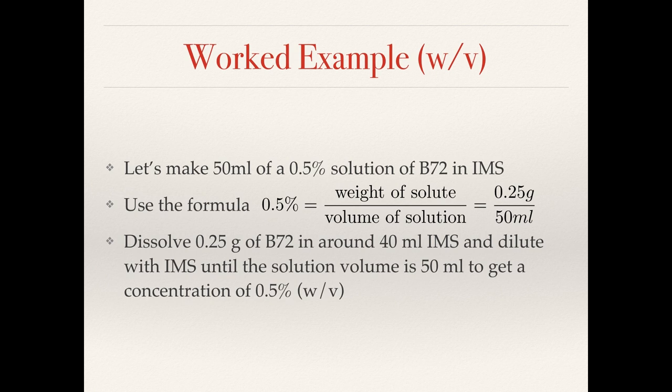In the next segment of this video we're going to go to the kitchen and make up the standard solution described here. We're going to make up 50 millilitres of a 0.5% weight-to-volume solution of Paraloid B72 in IMS. Using the formula, we have 0.5% equals the weight of the solute over the volume of solution, which works out to be 0.25 grams in 50 millilitres.